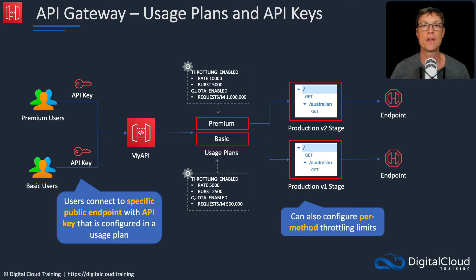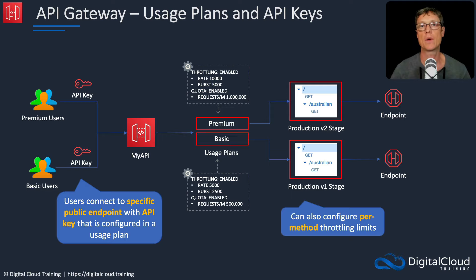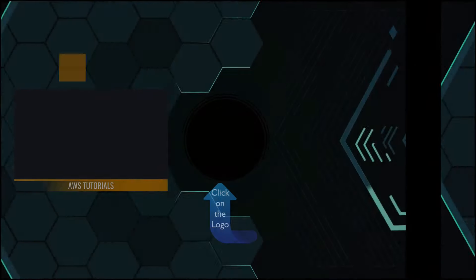That's it for the core theory — it is quite a complex subject. We're going to go into a couple of hands-on lessons now. First, I'll show you how to create a very simple REST API just to show you around the API Gateway console. Then in the next lesson, we're going to build an HTTP API that integrates with a number of AWS services as a functional application.